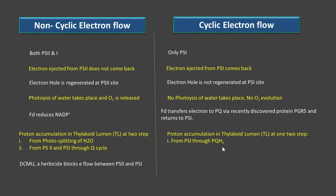Regarding DCMU: this herbicide blocks electron flow between PS2 and PS1. Therefore, in non-cyclic flow DCMU blocks electron flow, but in cyclic flow — where only PS1 is involved — DCMU does not block electron flow.